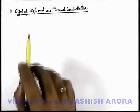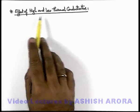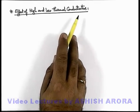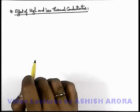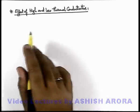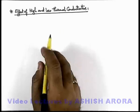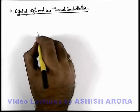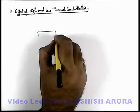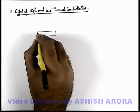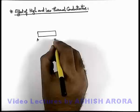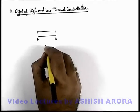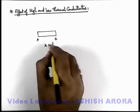Let us now understand the effect of high and low thermal conductivities on thermal conduction. Let's discuss the concept with the help of an example. Say we are given with a material section AB, and we consider its thermal conductivity to be very high.